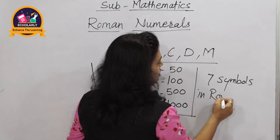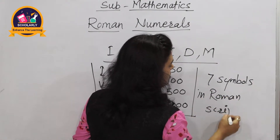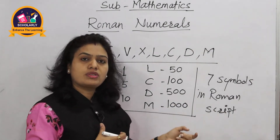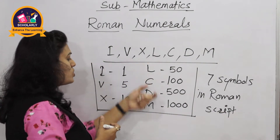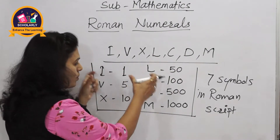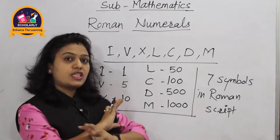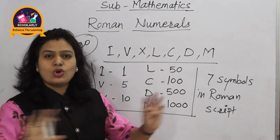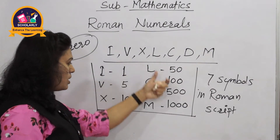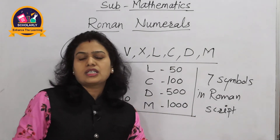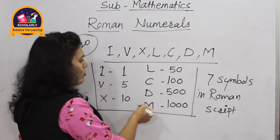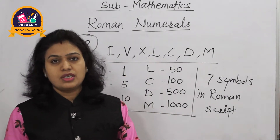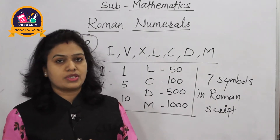Roman script consists of these seven symbols. All the numbers in Roman script are written using these seven symbols. If you observe them carefully, you will notice that there is no symbol for zero — there is no zero in Roman script. So how can we write numbers other than 1, 5, 10, 50, 100, 500, and 1000? There are certain rules to write Roman numbers.